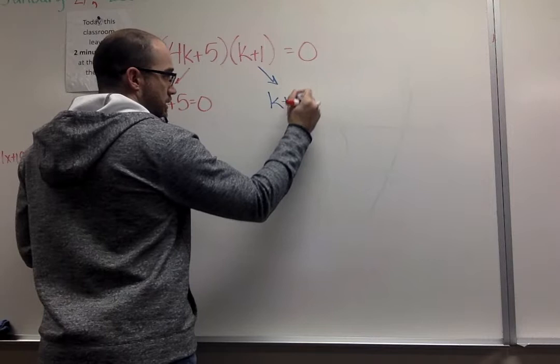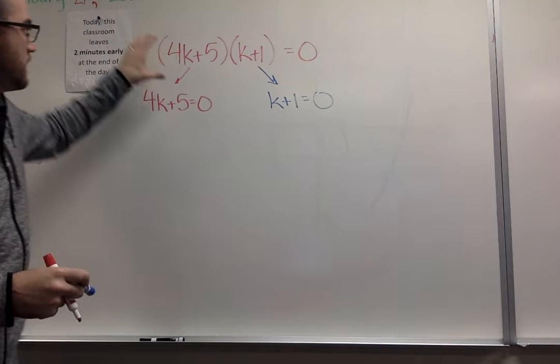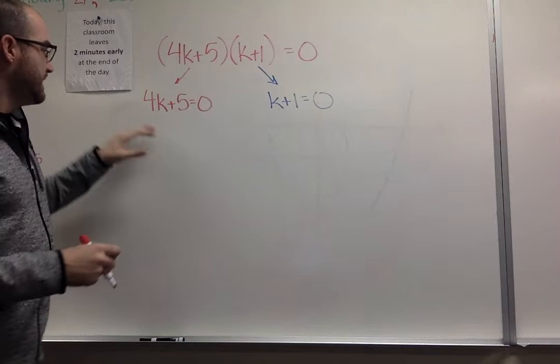However many parentheses we end up with, and for our unit we're really only going to have two, that's how many equations you're going to end up with. You may even have one out here if there's a variable on the outside.